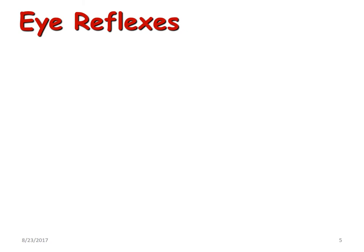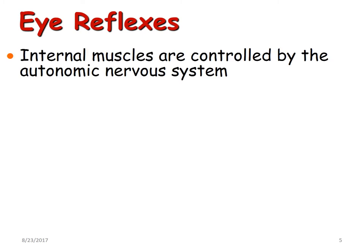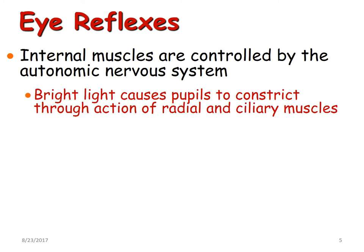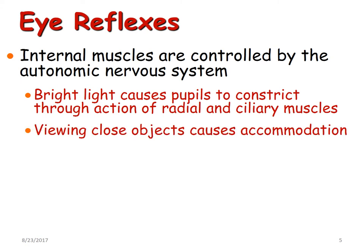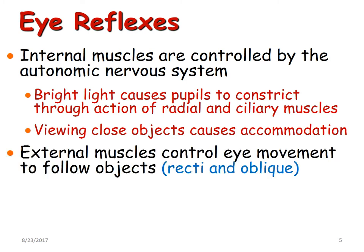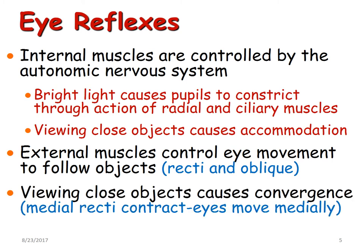Let's now look at the eye reflexes. Internal muscles are controlled by the autonomic nervous system. Bright light causes pupils to constrict through the action of radial and ciliary muscles. When viewing close objects, it causes accommodation. External muscles control eye movement to follow objects, i.e., the recti and oblique muscles. When viewing close or near objects, it causes convergence, brought about by the contraction of the medial recti muscles, which helps the eyes to move medially.